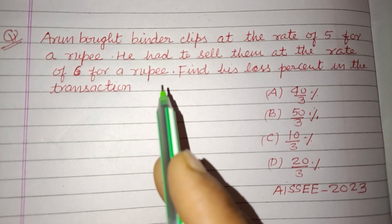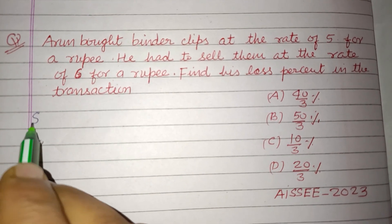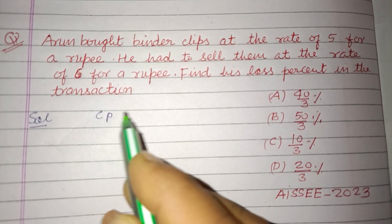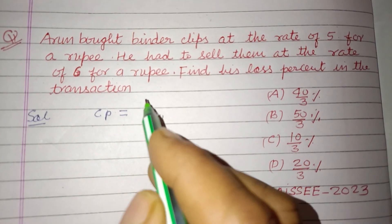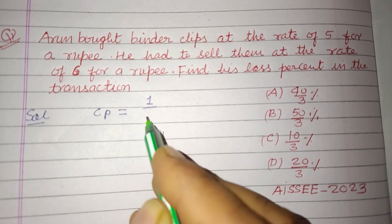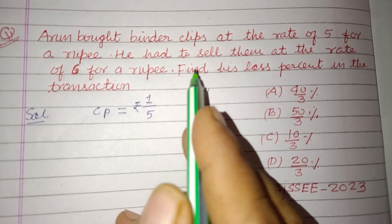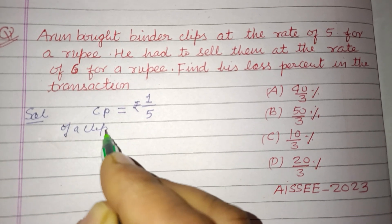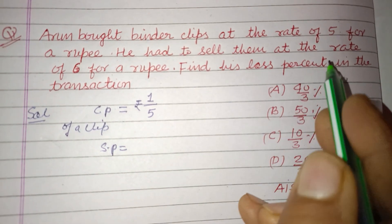6 for a rupee. Find his loss percent in the transaction. So students, here cost price is 5 for a rupee, so cost price of a clip is ₹1/5, and selling price of a clip is given to us